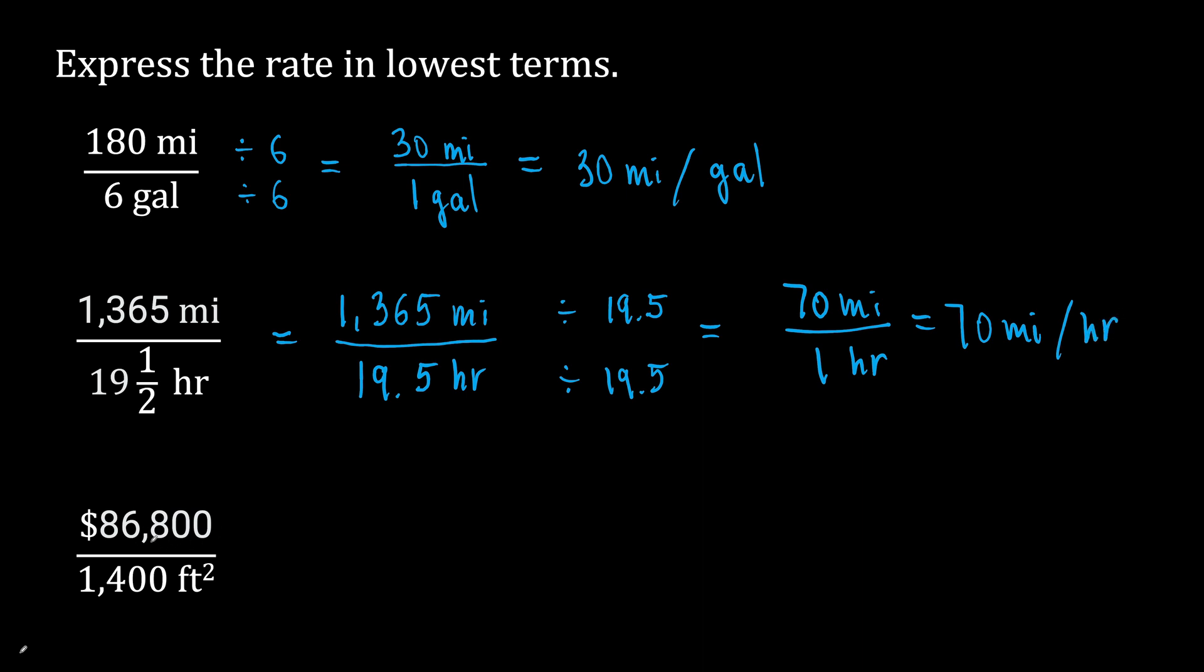Now let's look at our third rate. We have price per square feet, or cost per square feet. Let's write this rate with smaller numbers to get the dollars per square foot. I'm going to use a calculator to divide 86,800 by 1,400. So divide the numerator and denominator by 1,400.